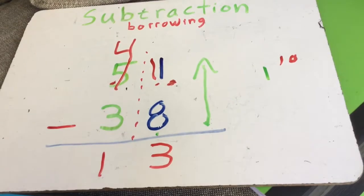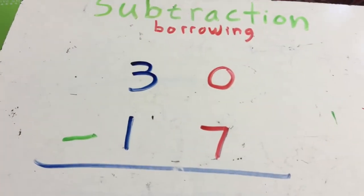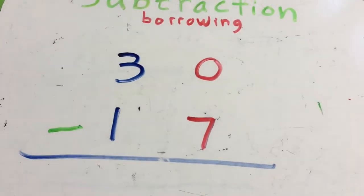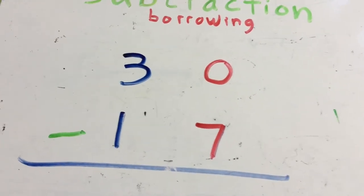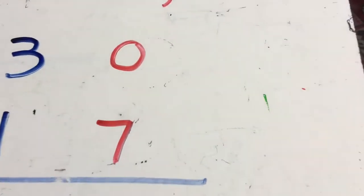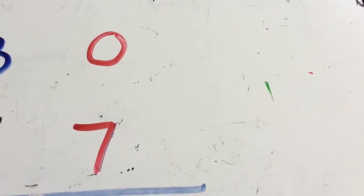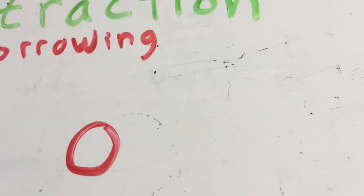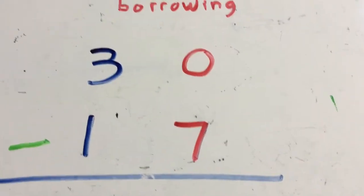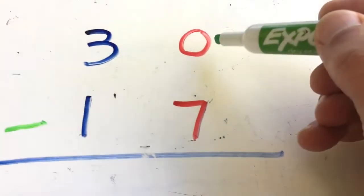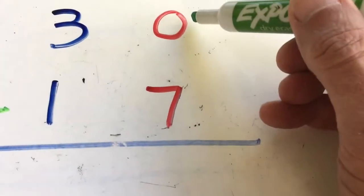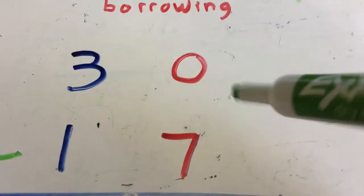Let's do another one. Next example, 30 minus 17. Okay, what have we learned so far? We always start in the ones place, and we always start from the bottom. Can I take it away from the top? Well, here, there's nothing there. Zero is nothing. I can't take seven away from zero. What do I do?